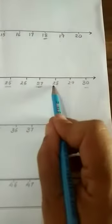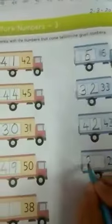Next is 50. So, here 49 comes before this 50. Next, 29. So, 28. So, 28 comes before 29.